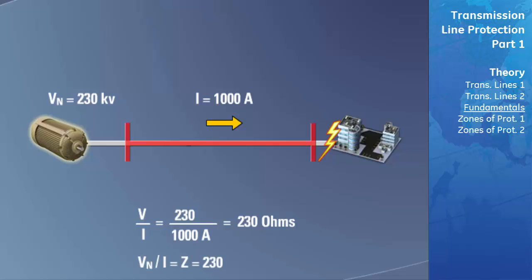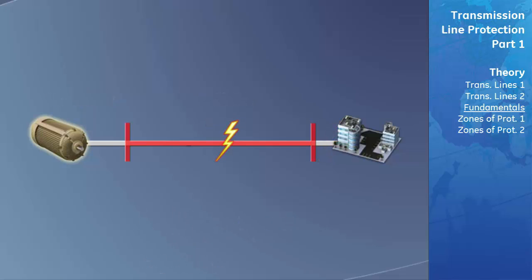The voltage will decrease because the only voltage drops now occur across the transmission line and the source impedance. In this example, the fault is located after the transmission line but before the majority of the power system load. Now the only impedance on this power system is the impedance of the source and the transmission lines before the fault. When this fault occurs, the current flowing through the transmission line will increase. The ratio of voltage over current, or impedance, will now significantly decrease. Distance relays are programmed to know the impedance to the end of the transmission line. If the impedance the relay calculates is less than the impedance of the transmission line, the relay knows that the fault is on the transmission line itself and must trip the circuit.